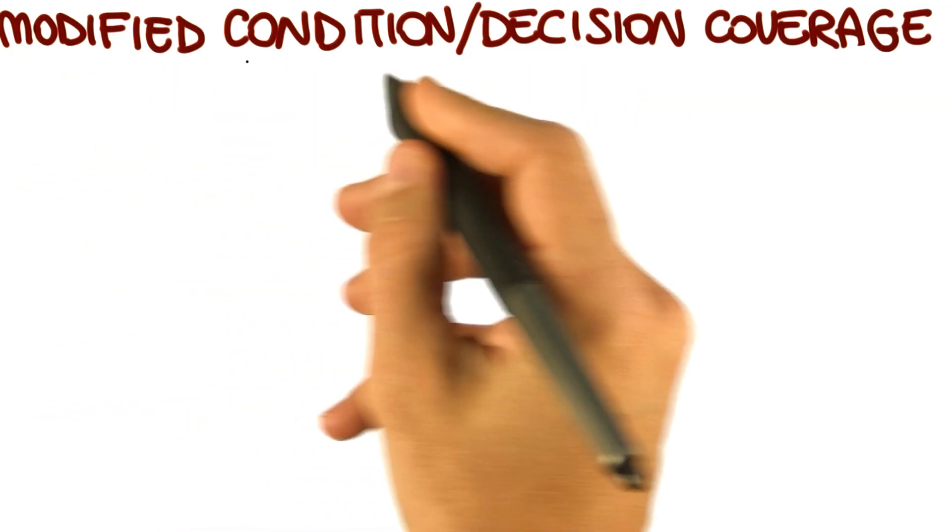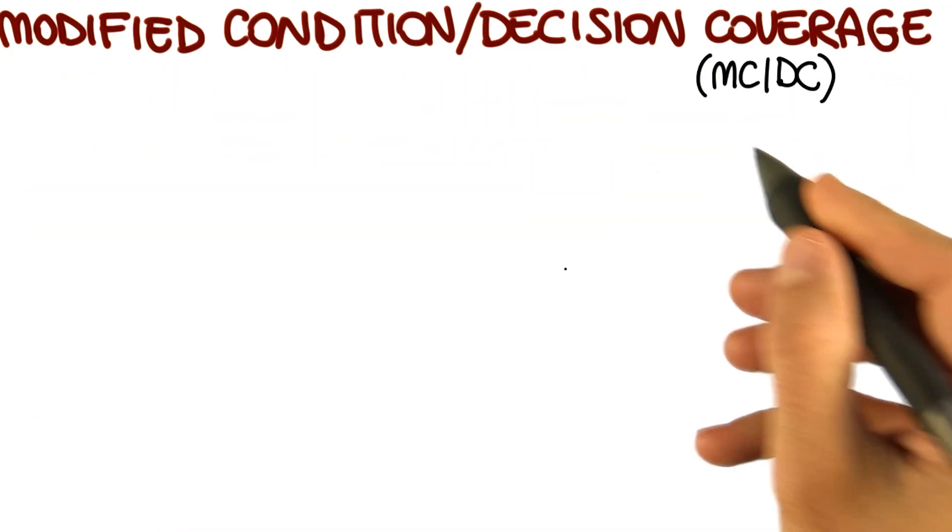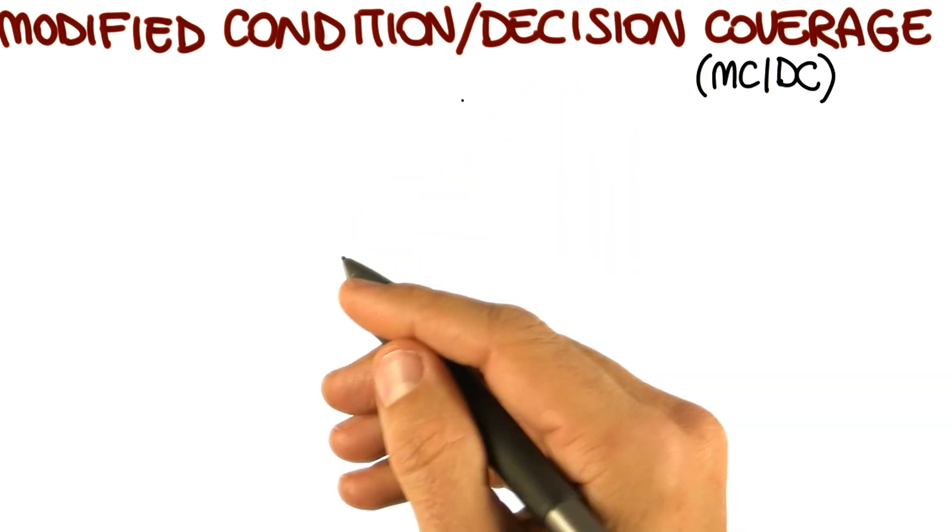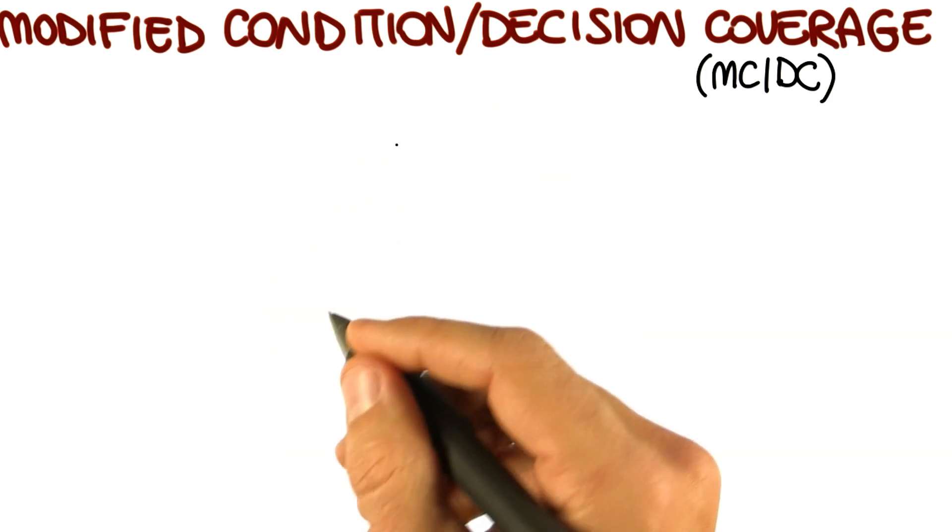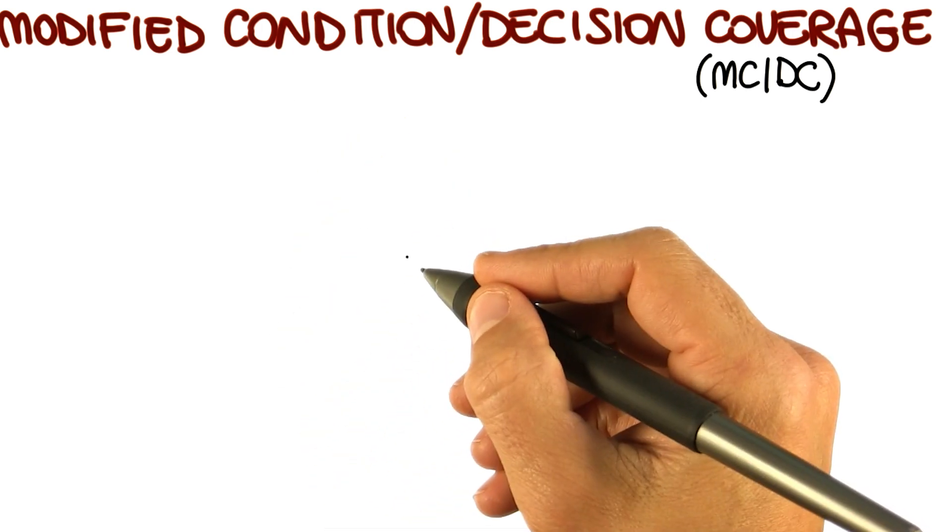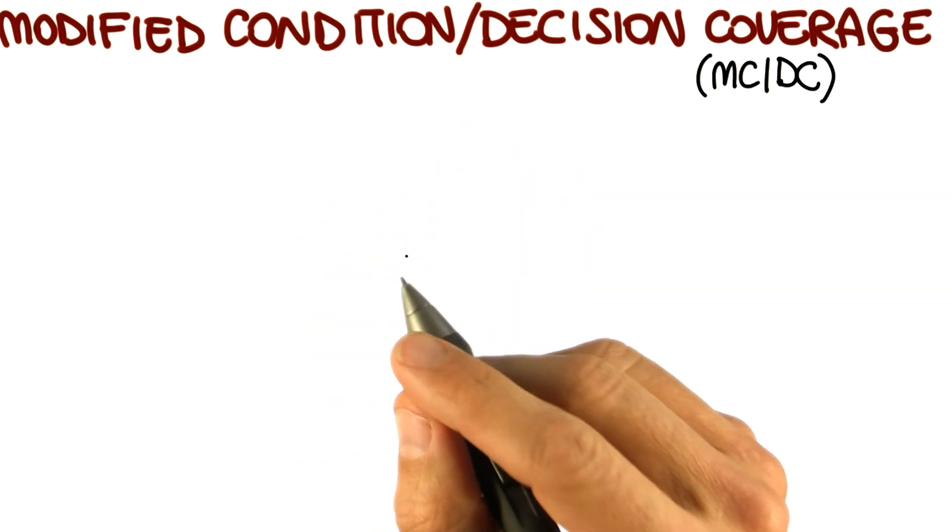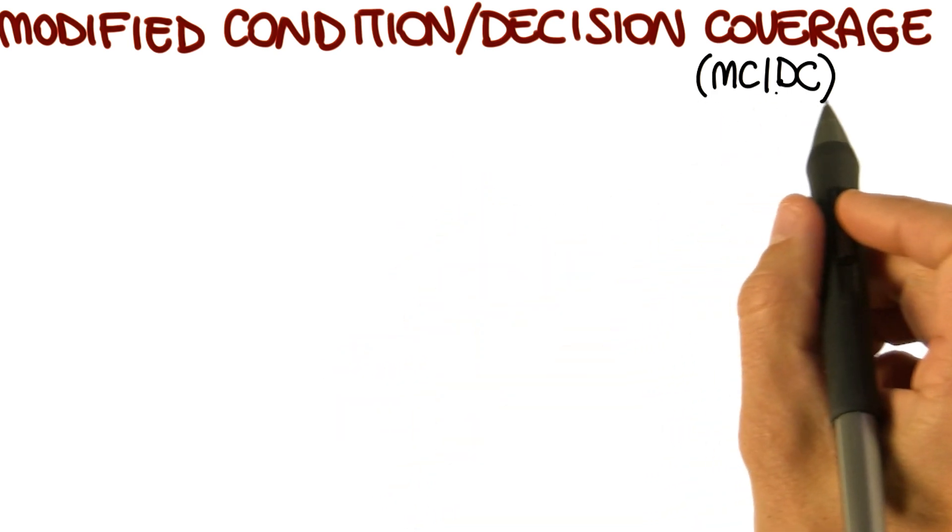This criterion is called Modified Condition Decision Coverage, also called MC/DC. This criterion is very important because it is often required for safety-critical applications. For example, the FAA, the Federal Aviation Administration, requires all software that runs on commercial airplanes to be tested according to Modified Condition Decision Coverage.